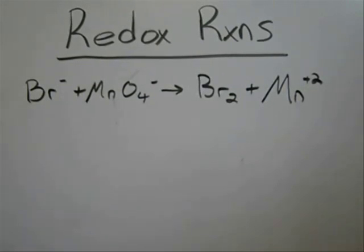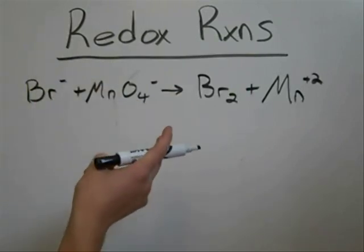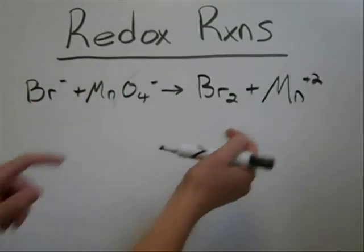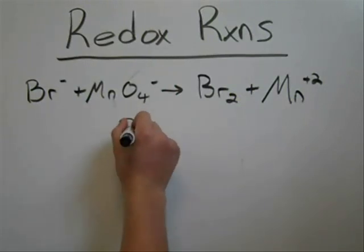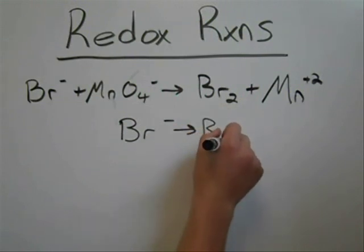First thing you have to do is break up the equation into its two half reactions, and you figure out what those are by similar elements. So the first one we're going to do is Br minus yields Br2.